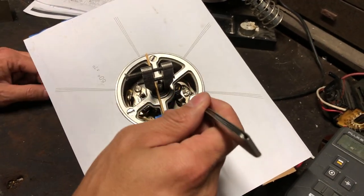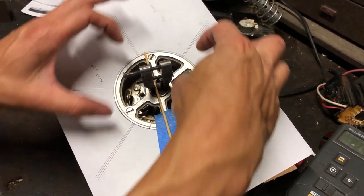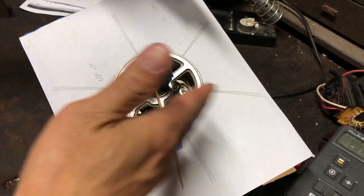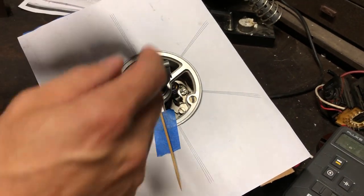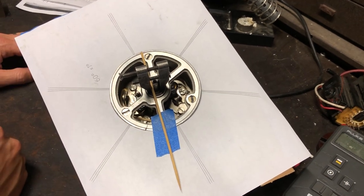So once you get the point gap adjusted, then it's a matter of getting these two relative to each other at 60 degrees apart, since it uses one lobe and two sets of points to distribute the spark all the way around the car.